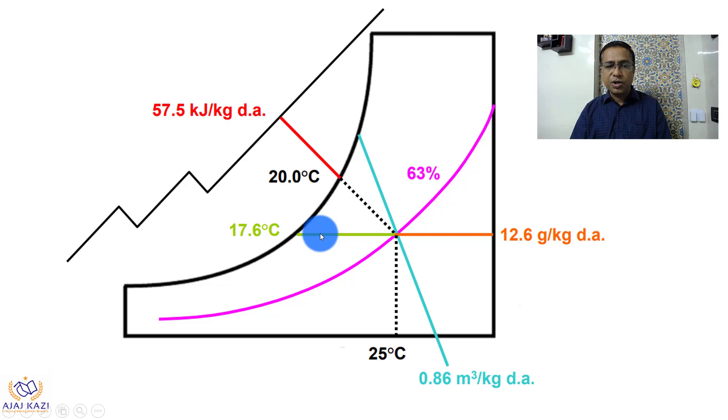This line which goes over here gives me a dew point of 17.6°C. The right-hand side gives me the humidity ratio. The purple line which comes from this point gives me the RH, the relative humidity of 63%.